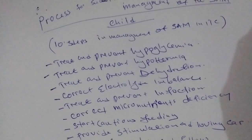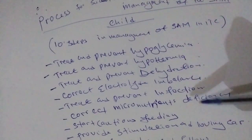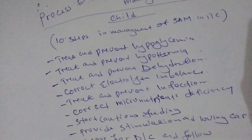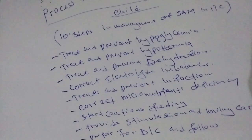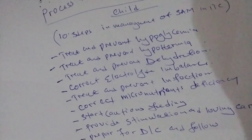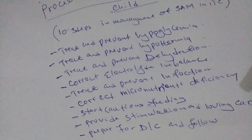If you remember, the medical complications include hypoglycemia, hypothermia, dehydration, and infection. In summary, the ten steps are: treat and prevent hypoglycemia, treat and prevent hypothermia, treat and prevent dehydration, treat and prevent infection, correct electrolyte imbalance, correct micronutrients deficiency, start cautious feeding, provide stimulation and loving care for the baby, and then prepare the mother for discharge and follow up. Thank you for watching and see you in the next one.